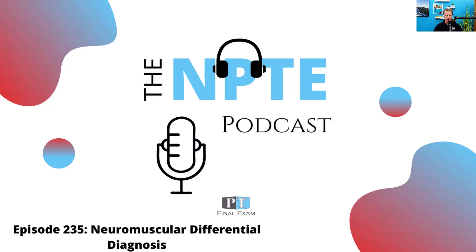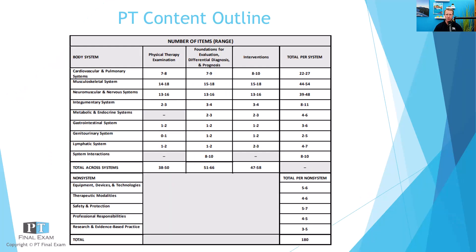Today I've got a practice question for you as we go through the FSBPT's content outline. Today is related to the neuromuscular and nervous system. This is the second largest system on the exam, somewhere between 39 and 48 questions. So clearly one of the large systems of the exam. Now, this question on its face does seem like a straightforward question, but it tests a couple of concepts and it's important to recognize that.